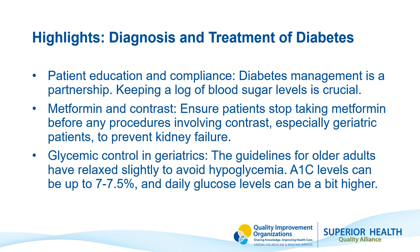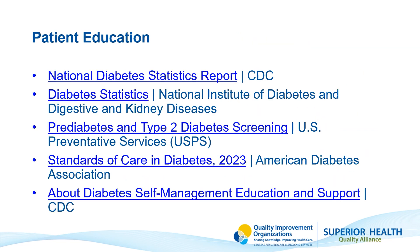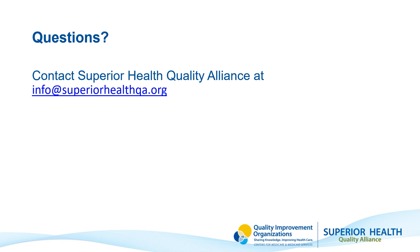In summary, here are some key takeaways: diabetes management is a partnership; keeping a log of blood sugar levels is crucial; patients need to know when to stop taking their metformin, such as before a procedure involving contrast dye; and guidelines for older adults who are more likely to develop hypoglycemia state that their A1C levels should not dip below seven. For tools and resources to further explore this information, or if you have any questions about this video series, please contact us at info@superiorhealthqa.org. Thank you.